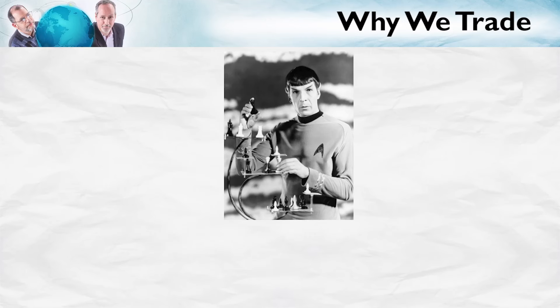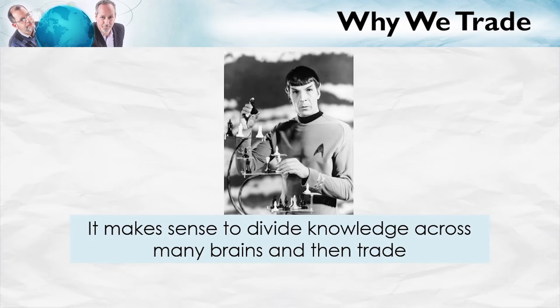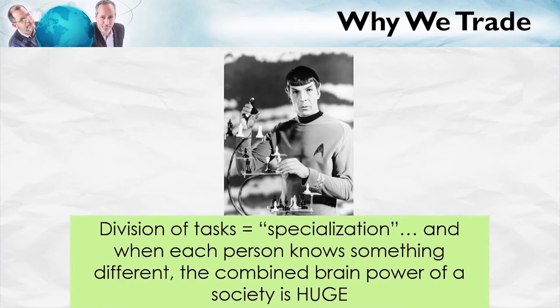By specializing, people become more productive, and they can learn more and grow and produce more yet. There's an episode of the classic TV show Star Trek where space aliens kidnap Mr. Spock to transplant his brain and use it in a computer to run their economy. Now that's terrible economics. Even Vulcan brains are limited, and there's simply so much to know about an economy. It makes much more sense to divide knowledge across many brains and then to have trade. This division of tasks — specialization, where each person knows something different — means the combined brain power of society is huge, much more than could fit into a single brain, even Mr. Spock's brain.